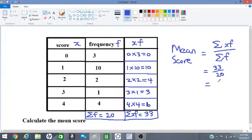Which gives 1 and 13 over 20. So this is the mean score. This is our answer. Thanks for watching and have a great day.